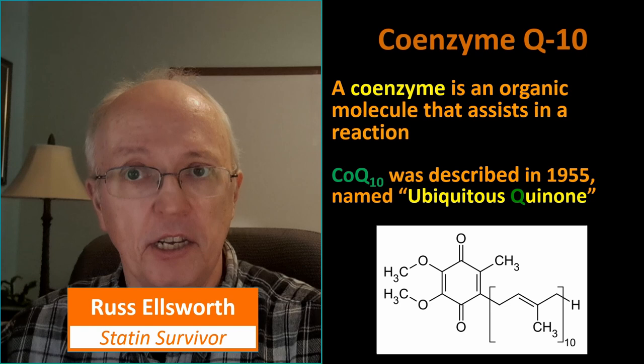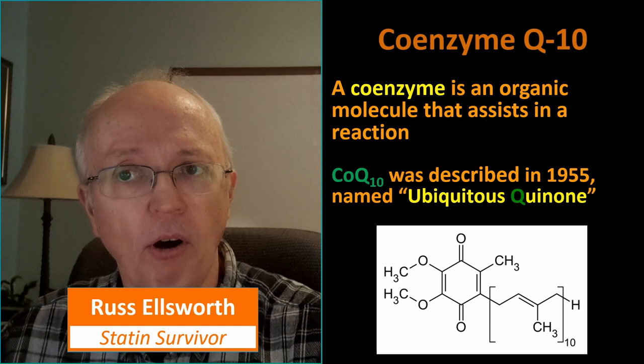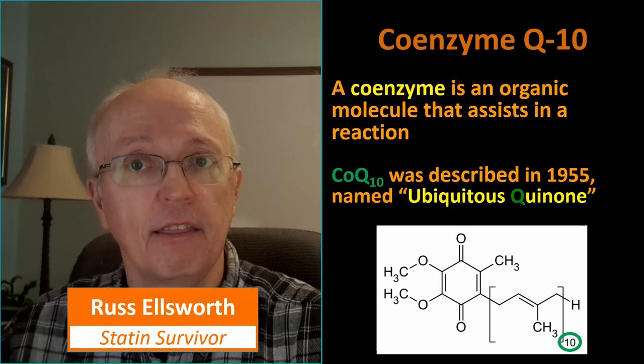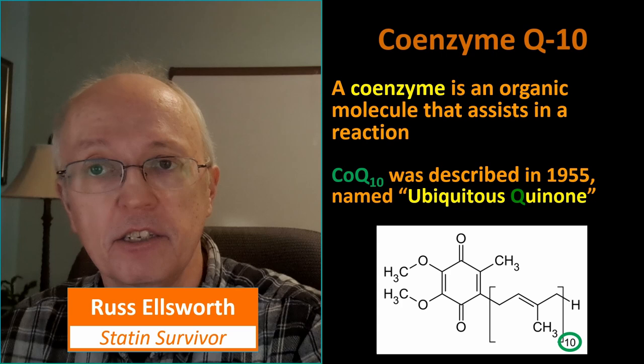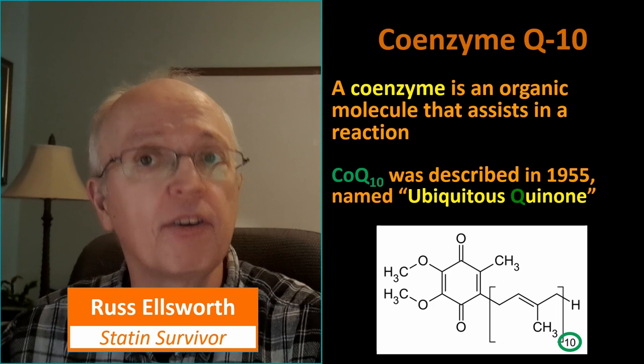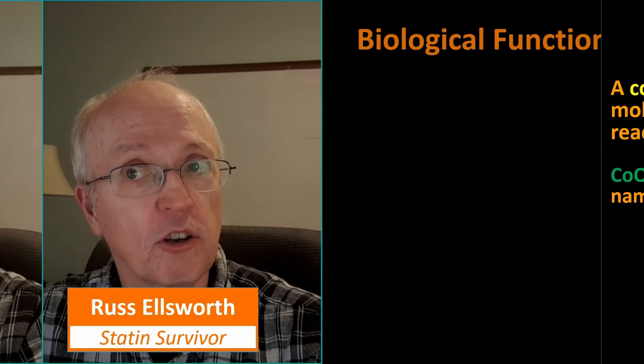For those of you interested in the biochemical structure, you can see it in this picture here. You see a bracketed area in the lower right — that is a part that can be repeated many times, and you'll see the 10 there circled in green. That is where we get CoQ10. It's a coenzyme quinone and there are 10 instances. There are CoQ6, CoQ7 — I've seen references up to CoQ11 in different species and probably within human biology, in different places.